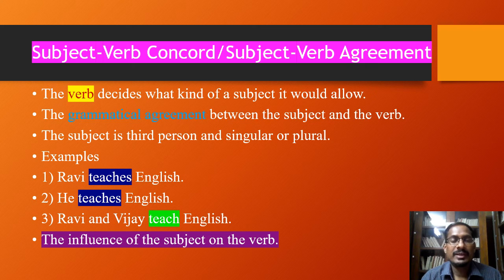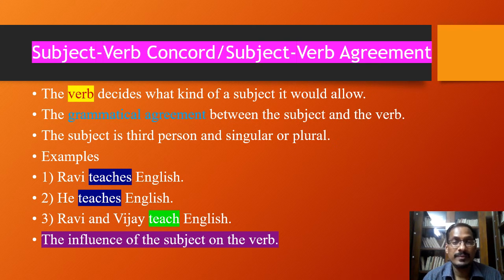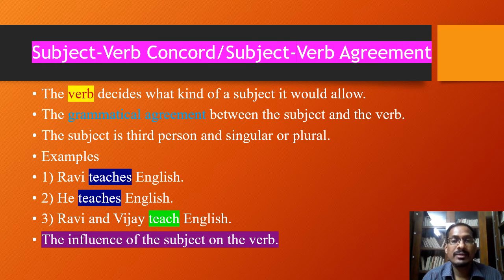This relationship is very important in subject-verb concord. We shall remember that the verb of a sentence decides what kind of subject it would allow. If you see the subject and verb together, you can find a grammatical relationship — the grammatical agreement between the subject and the verb. This relationship is clearly seen when the subject is third person and singular or plural. There are very particular, specific markers we can see in the verb of the sentence.